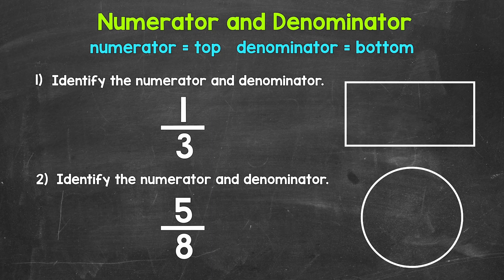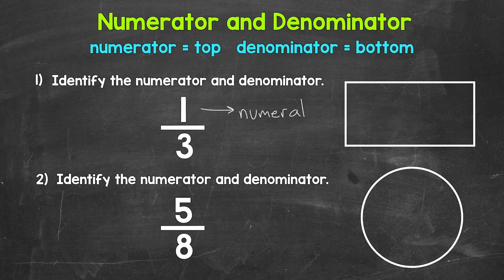Let's jump into some examples here and see, starting with number 1, where we have 1 third. We need to identify the numerator and denominator, and then we will draw out that fraction to help our understanding of what this means. The top number is the numerator, so this 1 right here is our numerator. The bottom number is the denominator, so 3 is our denominator here.